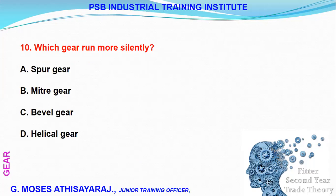Which gear runs more silently? A helical gear runs more smoothly and silently than a spur gear. That is the clear answer.